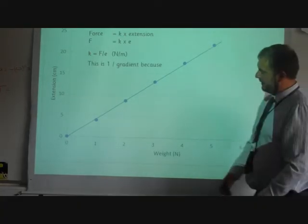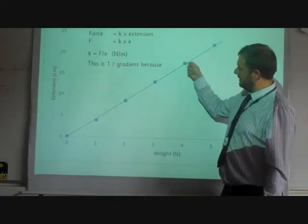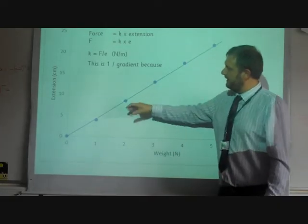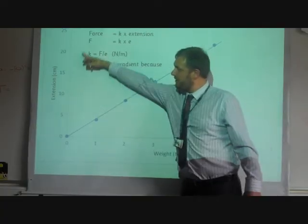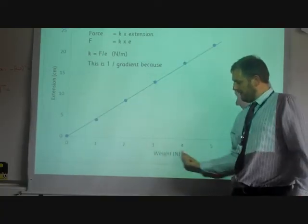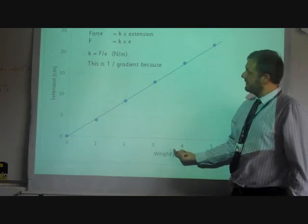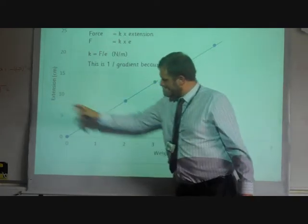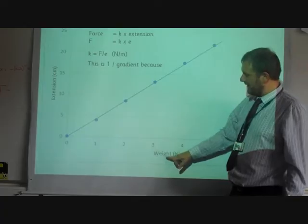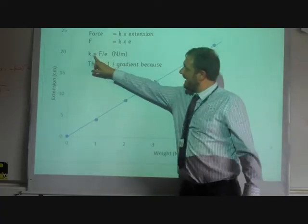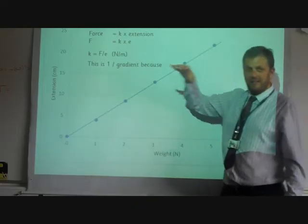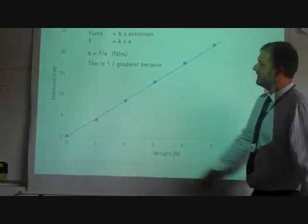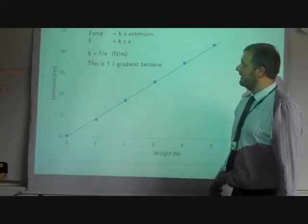If you look at our graph, we've got to think about this, because the gradient of this line, remember the gradient, is the change in this axis, which is the change in the y-axis, divided by the change in the x-axis. So that's going to be E divided by the force, E over F. So K is F over E. We've got to think that whatever the gradient is, we need to inverse or flip the gradient and do 1 divided by the gradient.